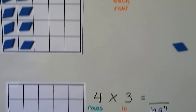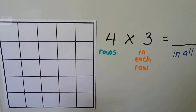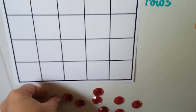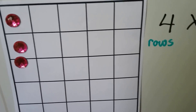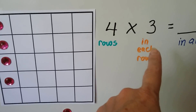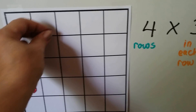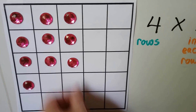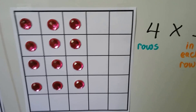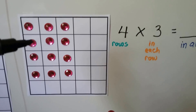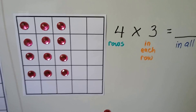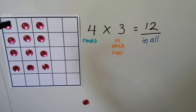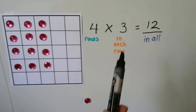Let's try it again. Now it says 4 times 3 — we need 4 rows. So we can use our gems here; we need 1, 2, 3, 4 rows, but we need 3 in each row. There are 3 in the first row, 3 in the second row, 3 in the third row, and 3 in the fourth row. How many gems do we have? 3, 4, 5, 6, 7, 8, 9, 10, 11, 12 — we have 12 gems in all. Now we've got 4 rows and there's 3 in each row.